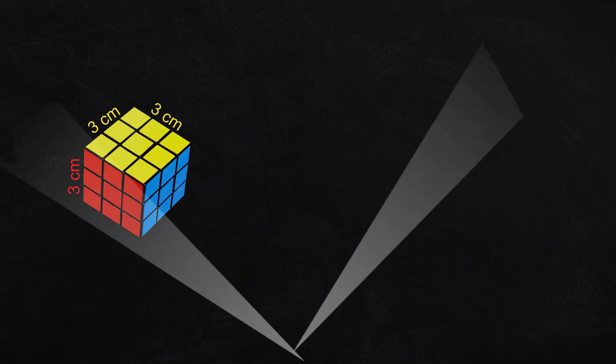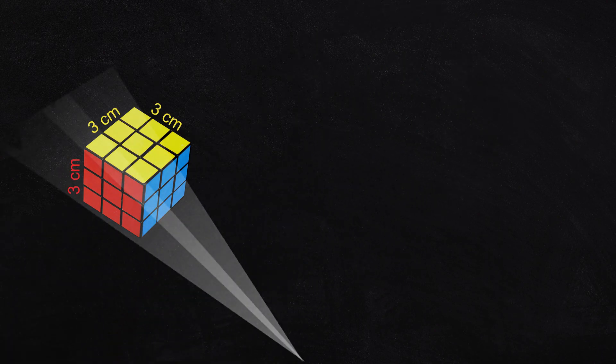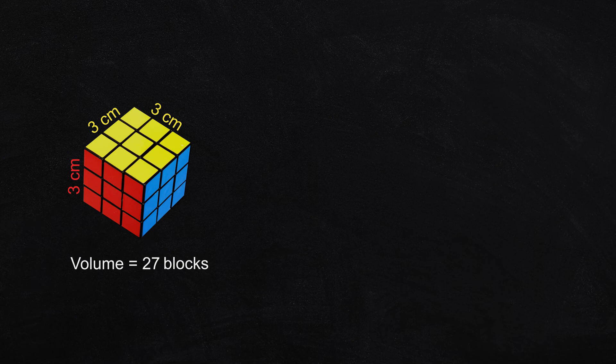This cube or square-based prism is made of 27 blocks, so its volume is 27 cubic centimeters. But counting blocks is not a practical way to calculate volume, so let's work out the volume of a prism with quick rules.